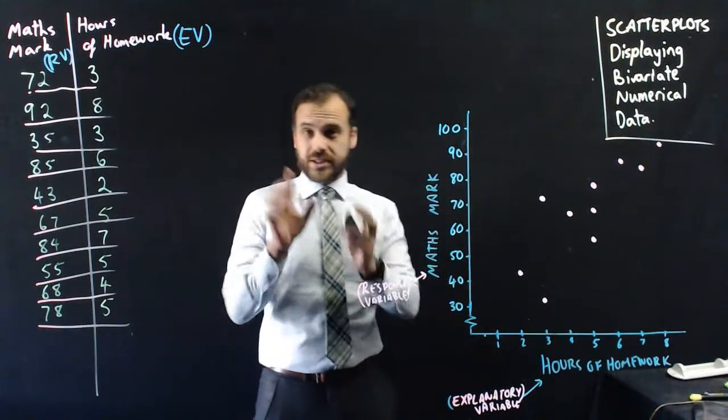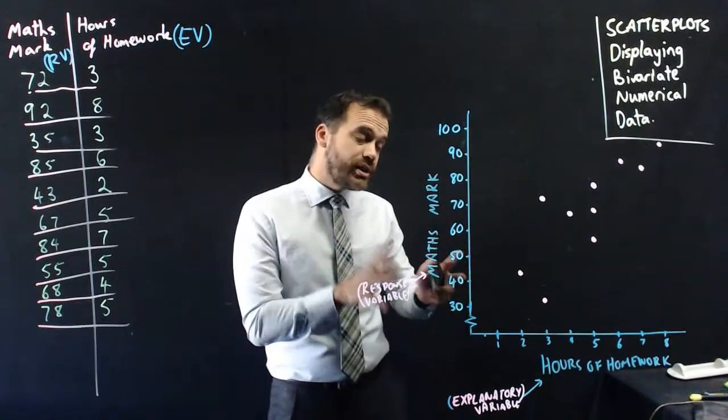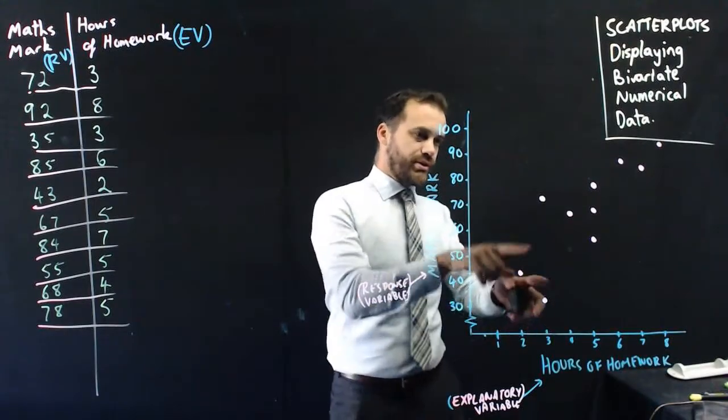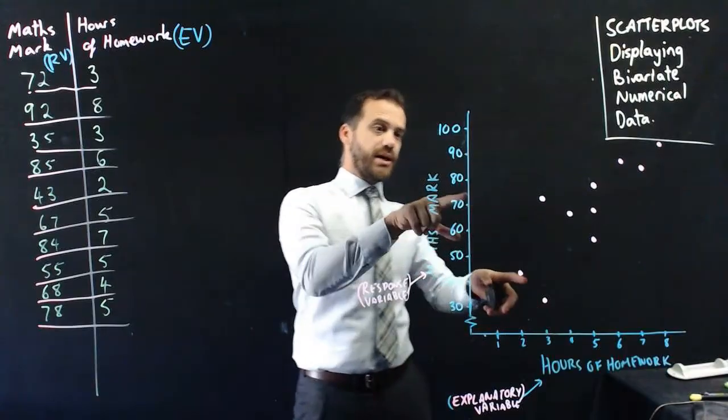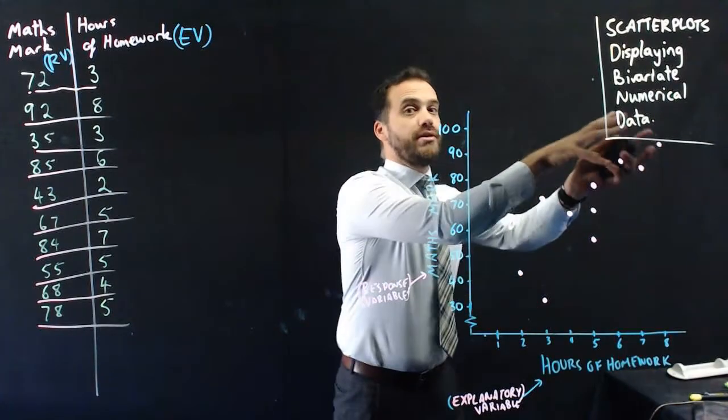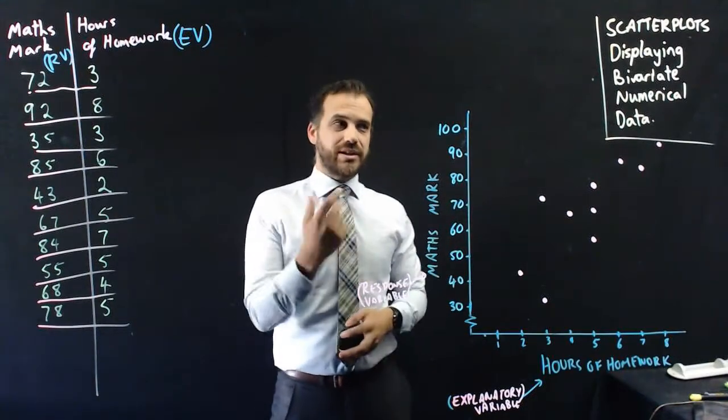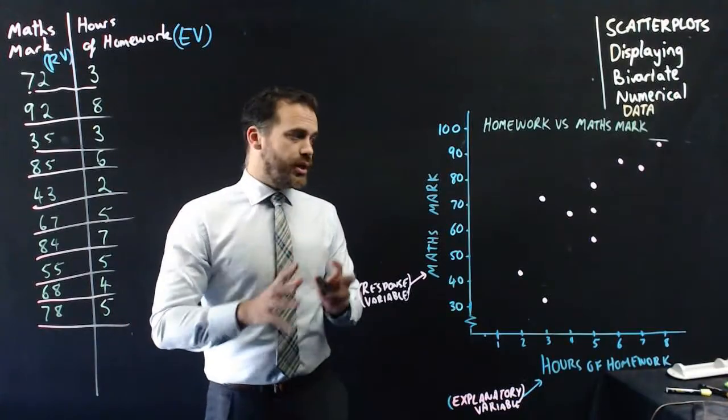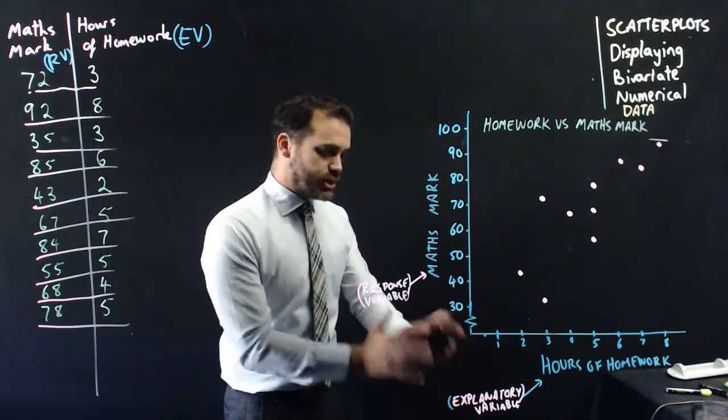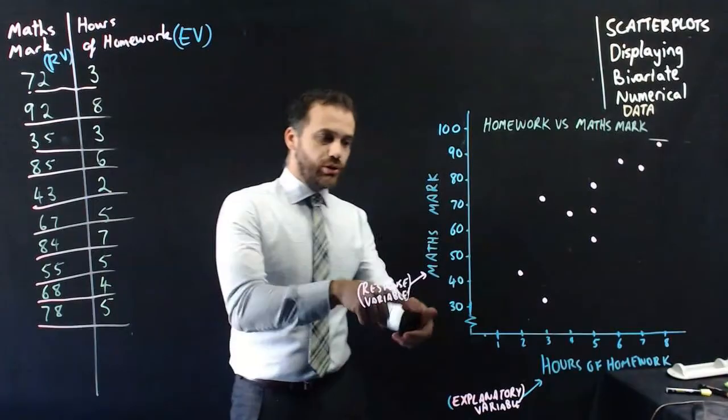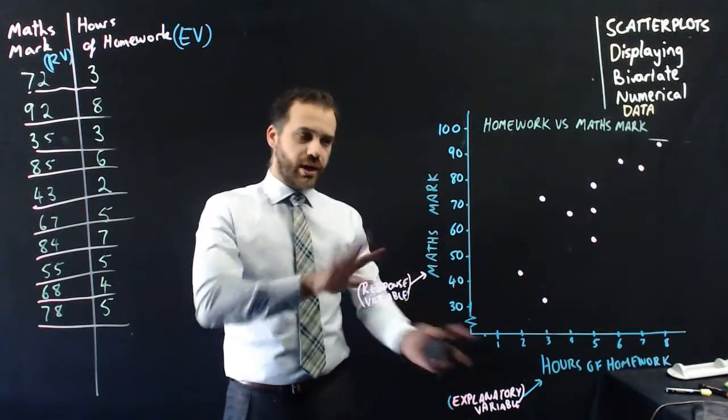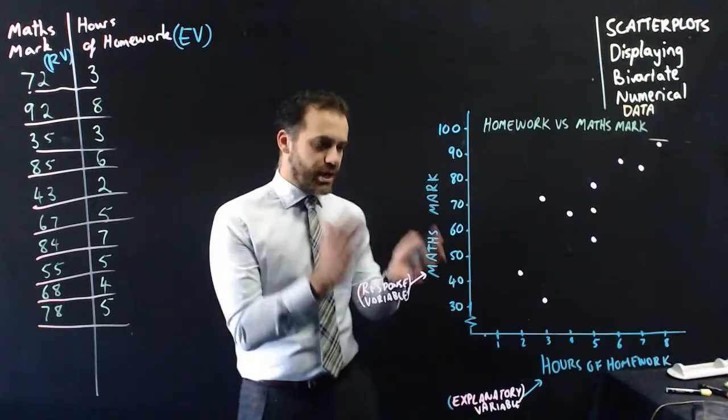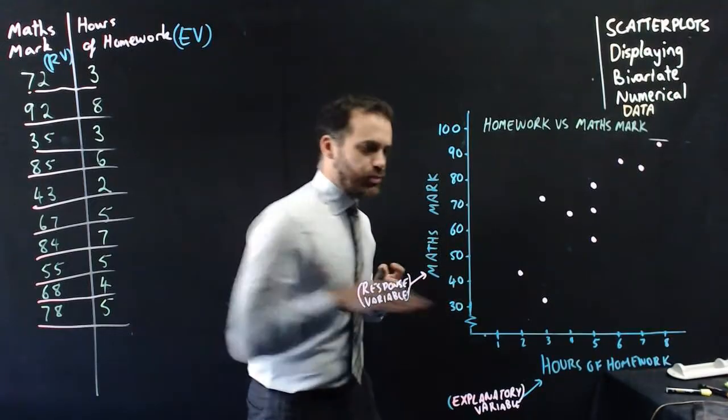You can see generally, and this is a subject for another video, but you can see generally the more homework a person does, the better their mark is. Now, obviously, there are some outliers, like this guy here. He only did 3 hours of homework, and he got a mark of 72. But generally speaking, there's kind of a trend upwards. But again, that's a subject for another video. The last thing I really need is a title here. And probably the only thing you really need to remember, the thing that's very important here, is when you do this, check your question, look for what the explanatory variable is, and put it on the x-axis. Look for what your response variable is, and put it on your y-axis. If you flip those, your teacher's going to get a little upset. You're going to get a little x on your exam question. So make sure that you understand which one's which, and you put the explanatory on the bottom.